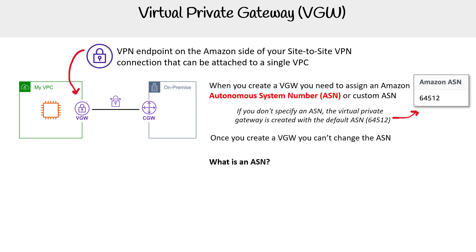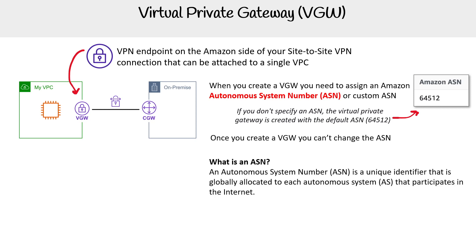An autonomous system number is a unique identifier that is globally allocated to each autonomous system that participates in the internet. It's a way for your device to be detected as something to do with Border Gateway Protocol.